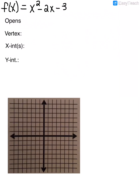Let's look at this example. f of x is equal to x squared minus 2x minus 3. To determine what direction it opens, we look at the coefficient of x squared. The coefficient of x squared is a positive 1, so that tells us that our function opens up.